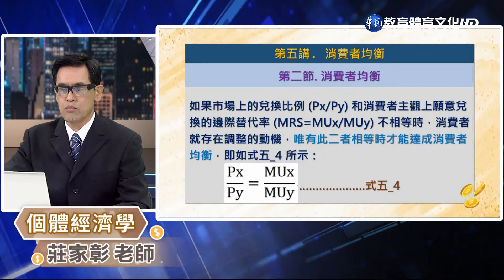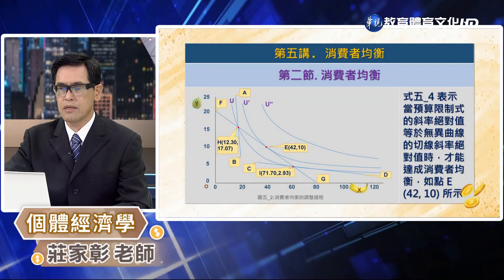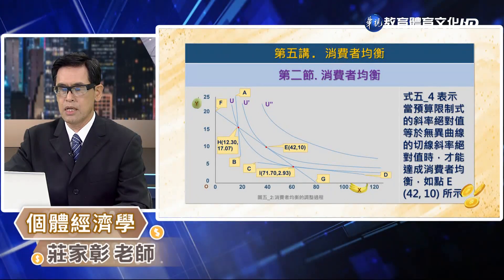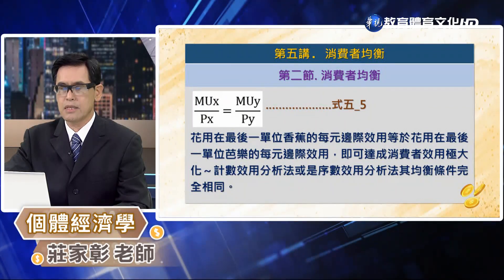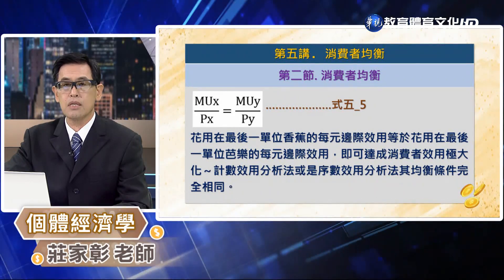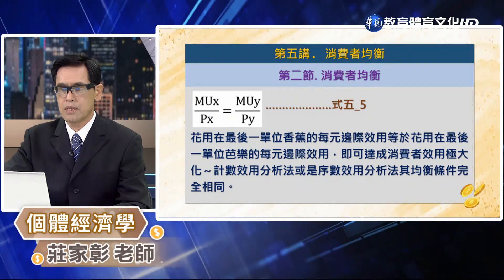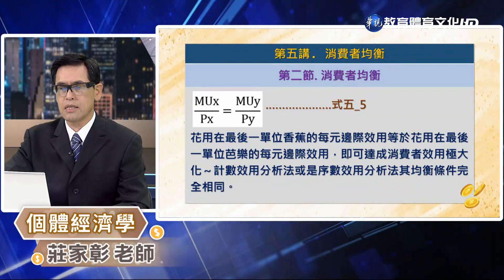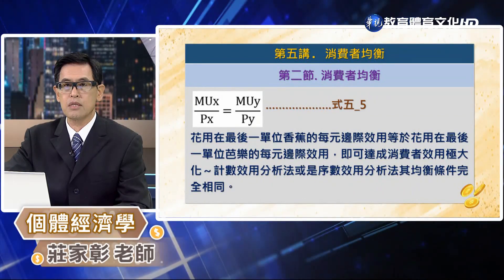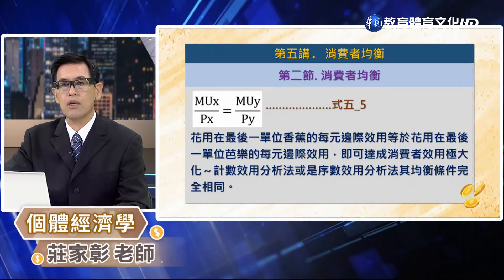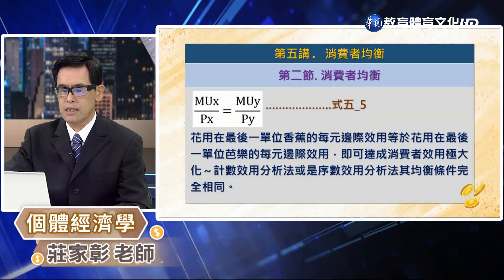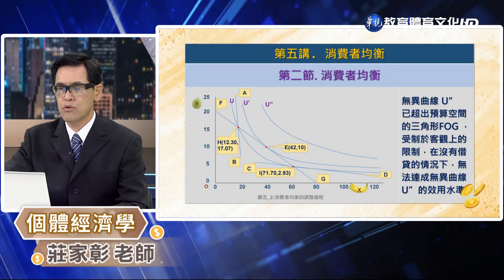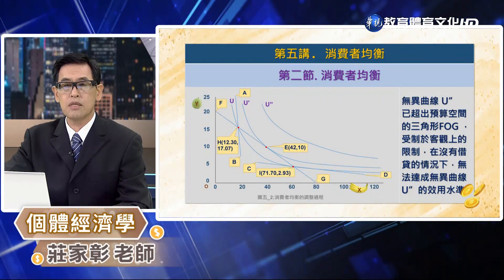公式4-5-4表示的就是預算限制式的斜率絕對值跟無異曲線的切線斜率絕對值相等，才能達到消費者均衡。這就是我們在第三講次裡面所代表的：花用在最後一單位香蕉的美元邊際效用必須等於花用在最後一單位巴勒的美元邊際效用，在這種情況之下就可以達成消費者效用的極大化。